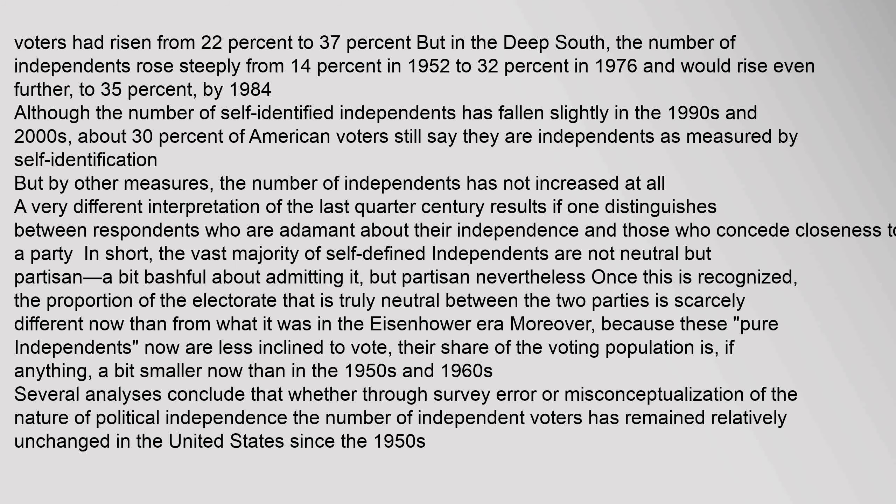Although the number of self-identified independents has fallen slightly in the 1990s and 2000s, about 30% of American voters still say they are independents by self-identification. However, by other measures, the number of independents has not increased at all. A very different interpretation results if one distinguishes between respondents who are adamant about their independence and those who concede closeness to a party. The vast majority of self-defined independents are not neutral but partisan — a bit bashful about admitting it. Several analyses conclude that the number of truly independent voters has remained relatively unchanged in the United States since the 1950s.